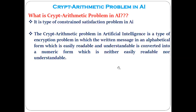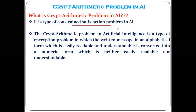Already in the previous lecture of the second unit we have seen what we mean by the crypt arithmetic problem. It is one kind of constraint satisfaction problem — a problem-solving approach in artificial intelligence. It is nothing but finding the solution to a certain problem where the solution is possible only if certain rules or constraints are satisfied.